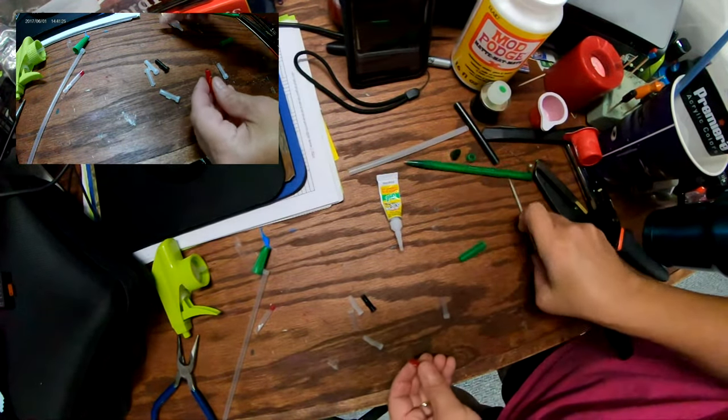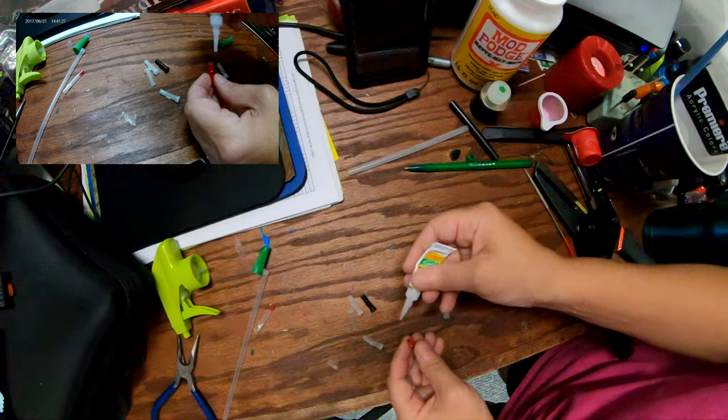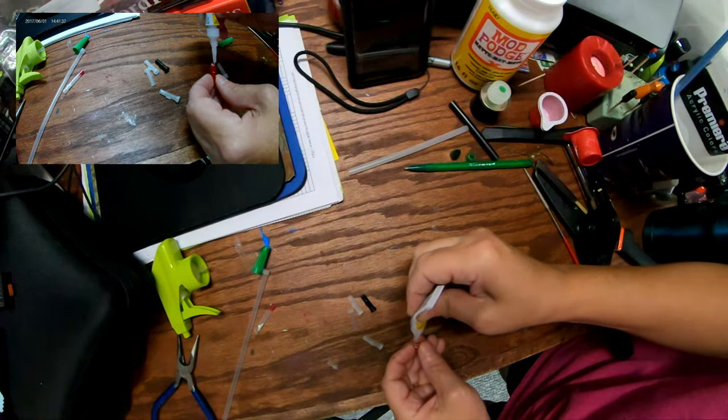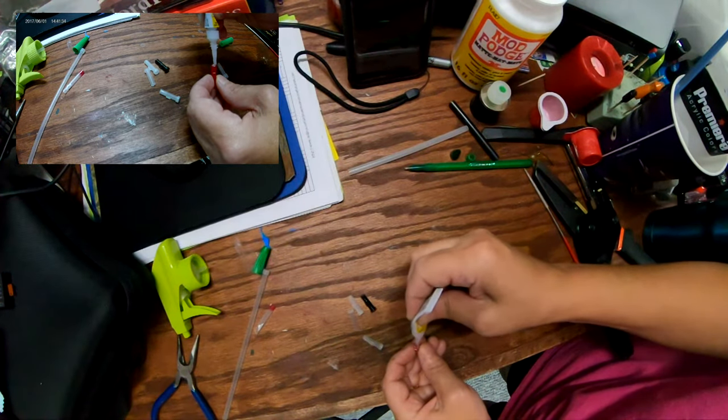So what you're going to do, you're going to put a little bit of crazy glue right here on this end. If you don't want to do this part, you can use hot glue as well and just fill that little hole.